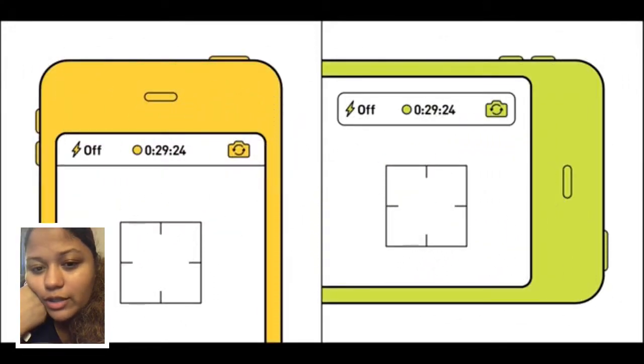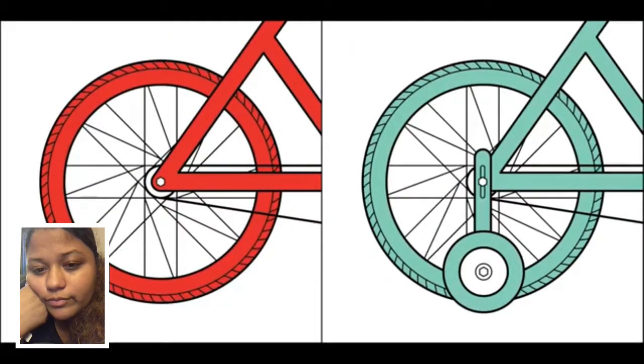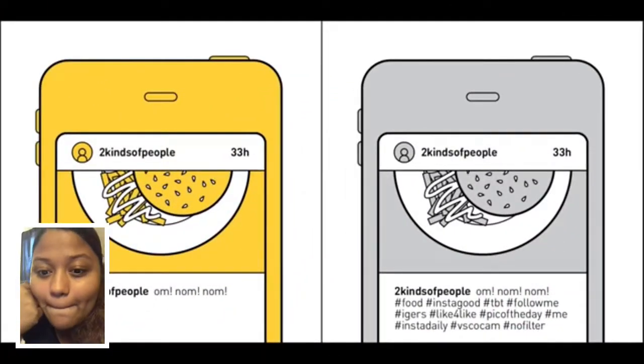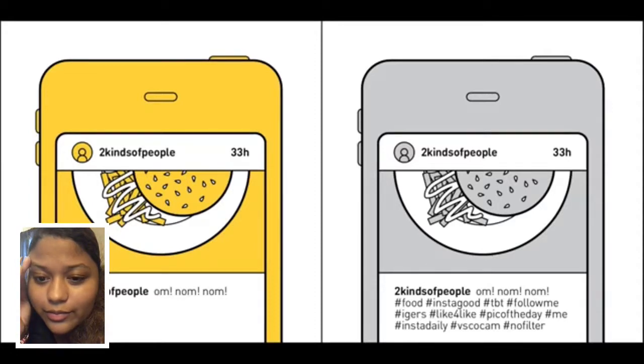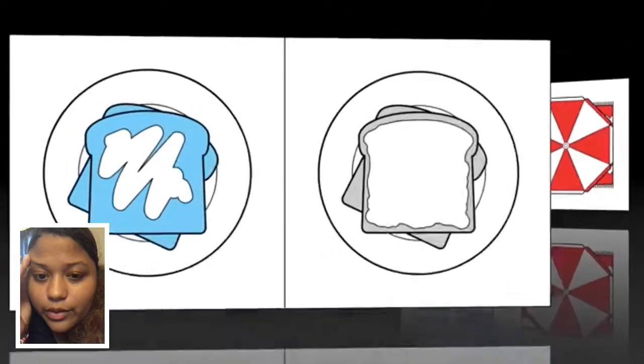I always forget to do landscape, so I end up doing portrait. Too old for training wheels. I'm all the hashtags. The beach towels. I want to be extra with the umbrella though.